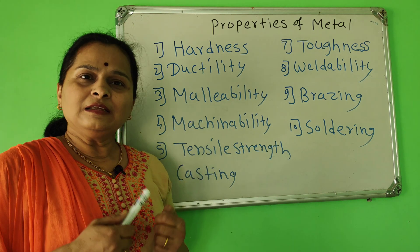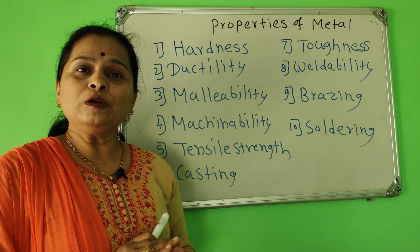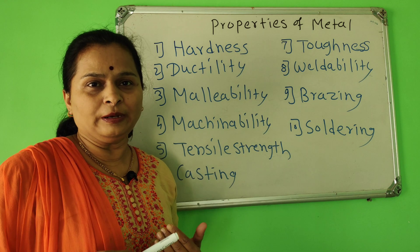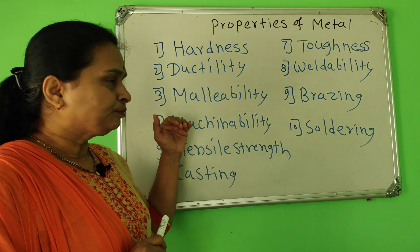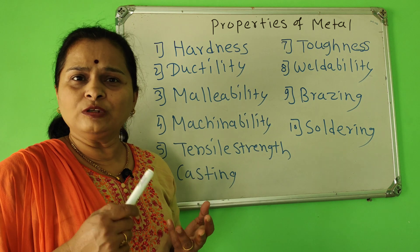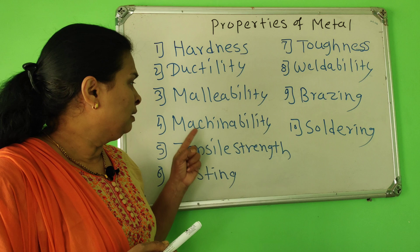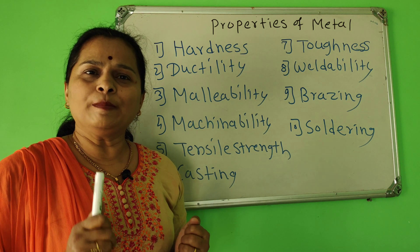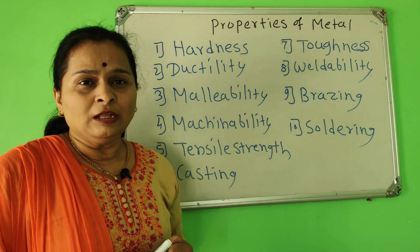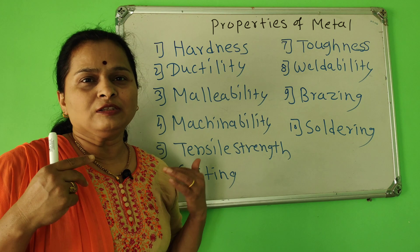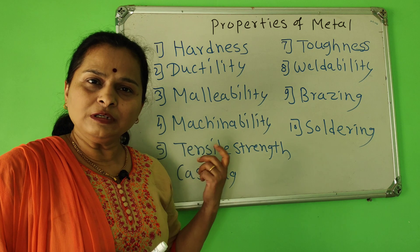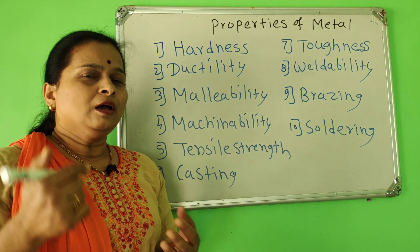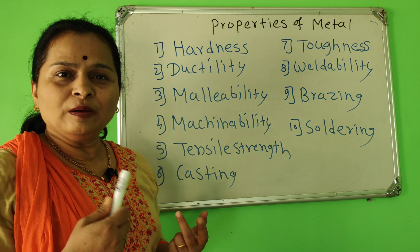Malleability is the ability of metal to be drawn into thin sheets or rolled into thin sheets without breaking. Same examples: gold, silver, copper, aluminium. Then machinability is the ability of metal to be cut by using cutting tools — that means we can cut these metals with cutting tools. For example, copper, iron, aluminium, gold.